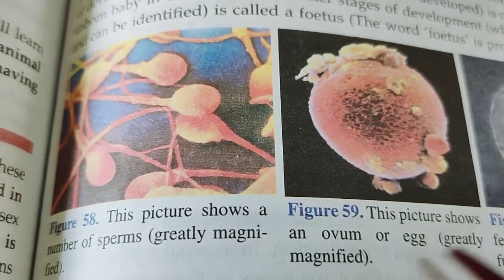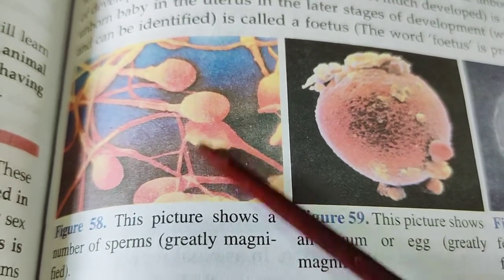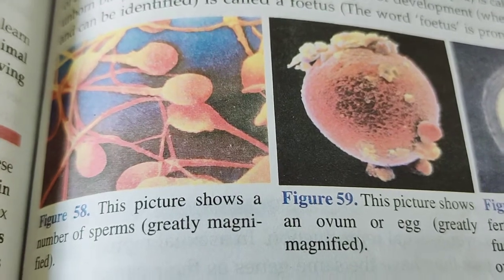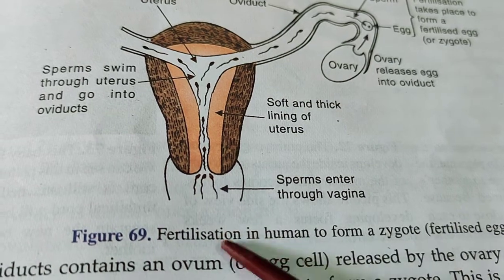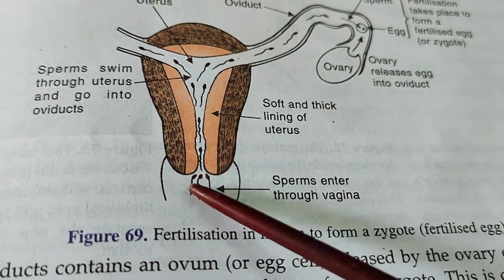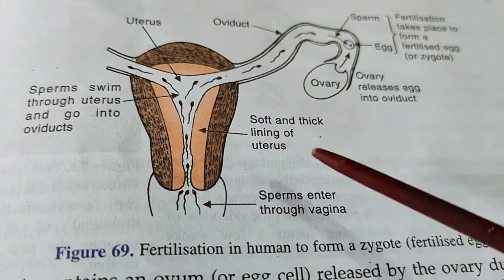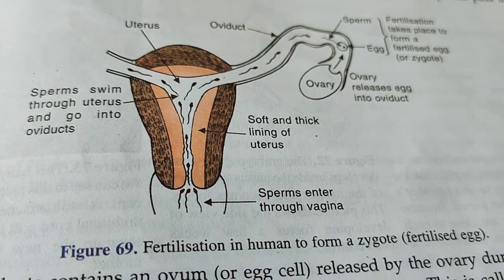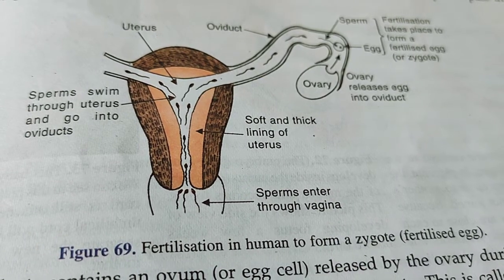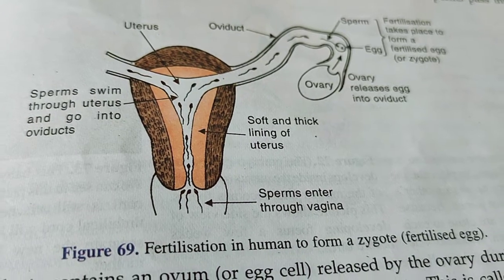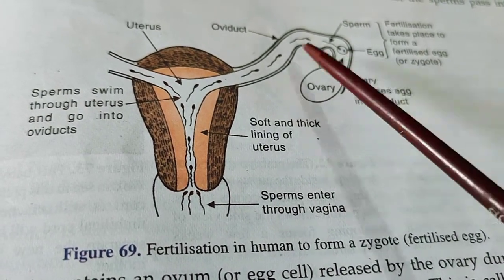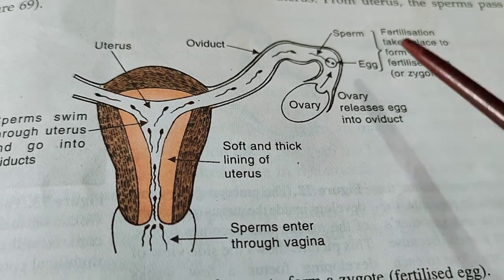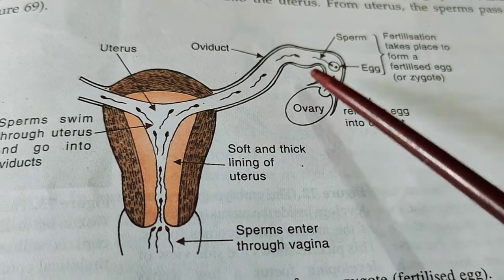Here in this picture we can see original highly magnified figures of sperms and the egg or ovum. During the process of fertilization, sperms enter through the vagina, pass through the uterus, and reach the fallopian tube. A single egg is produced every month from one of the ovaries. This egg is fertilized by the sperm, and fertilization takes place to form a fertilized egg or zygote inside the fallopian tube.